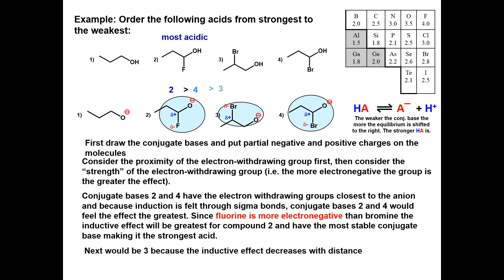Next would be 3, because the inductive effect decreases with distance. And the weakest acid would be the alcohol, 1, because it does not have an electron withdrawing group on the molecule.